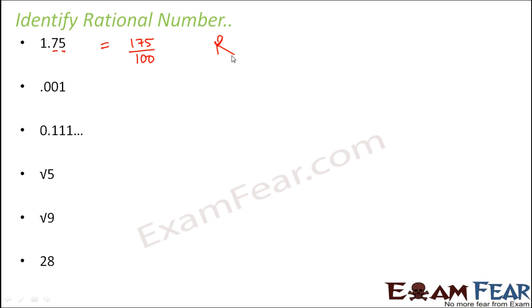Next, 0.001. After the decimal we have three digits — a fixed number — therefore this is also a rational number. You can write it as 1 by 1000, which is again in the form p by q.